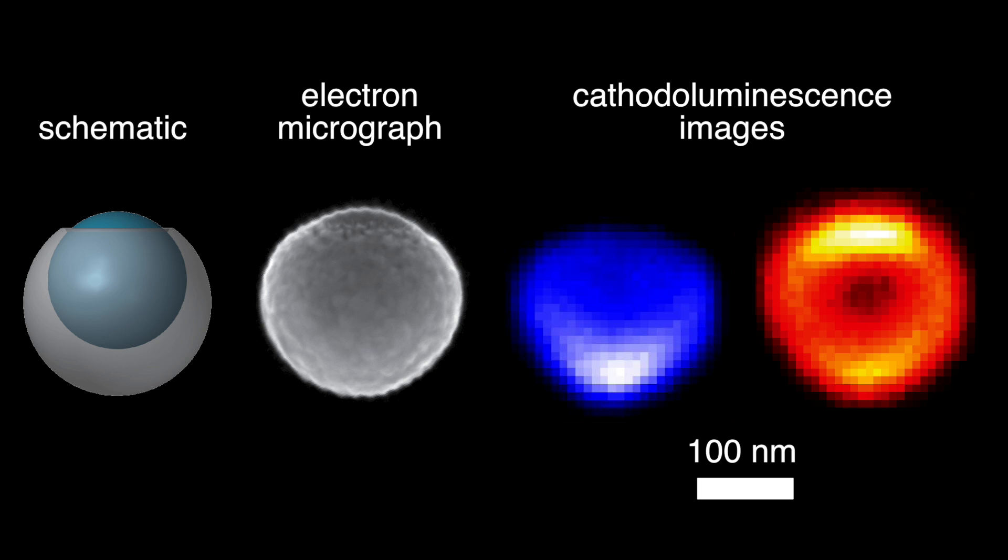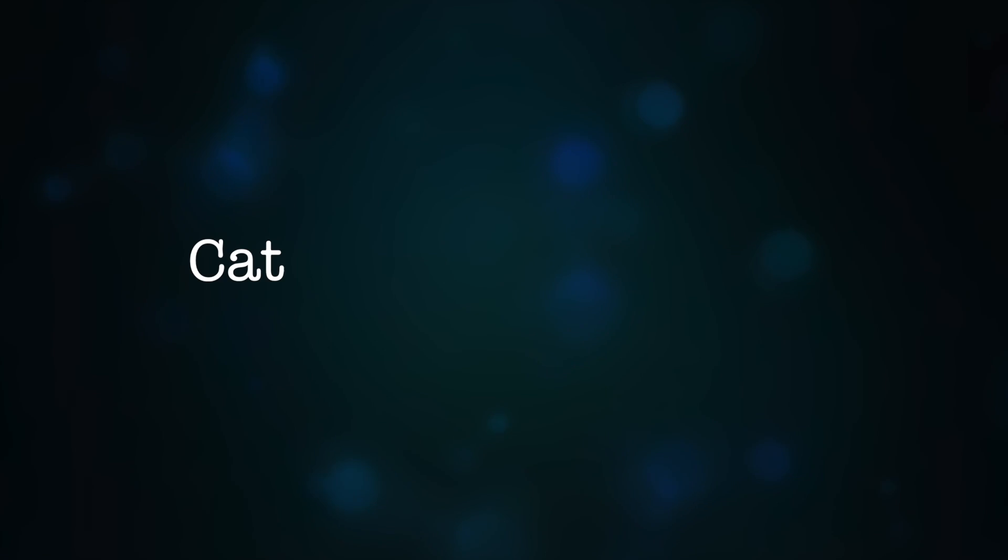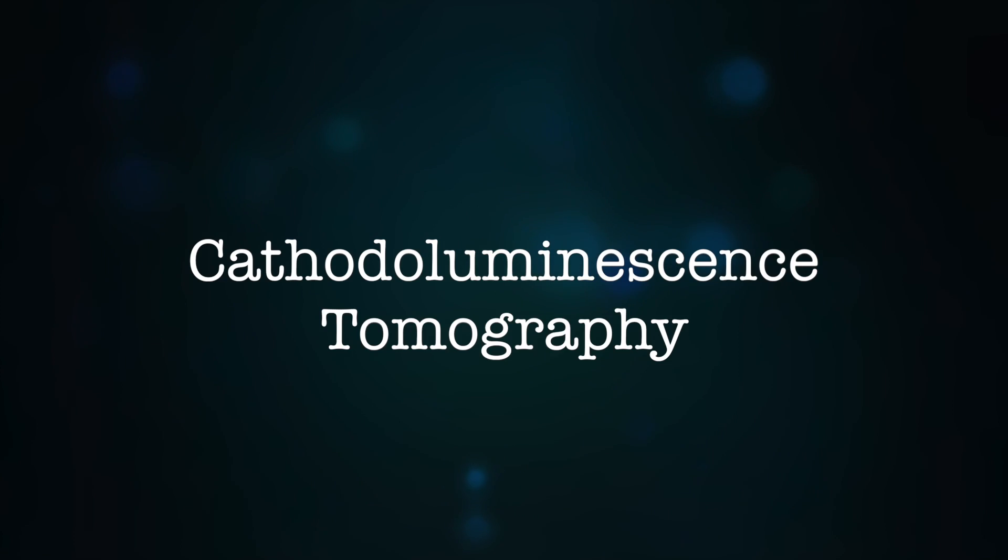But these 2D images only tell part of the story. Imagine trying to identify a person just by looking at her shadow. It would be quite a challenge. To push this technique into the third dimension, we combine cathodoluminescence with tomography.